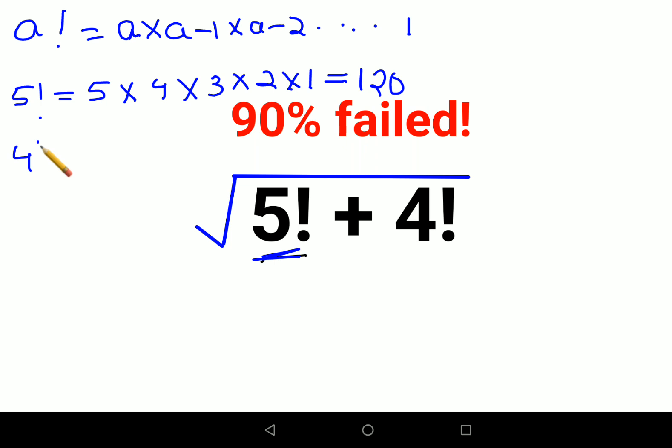Now what is 4 factorial? 4 factorial is 4 multiplying by the next consecutive number which is 3, 2, and 1. So that gets you 24. So 4 into 3 is 12, into 2 is 24.